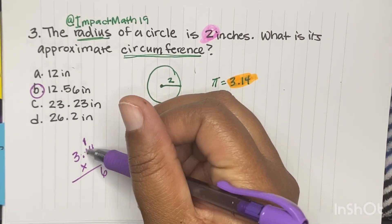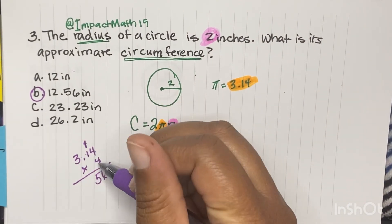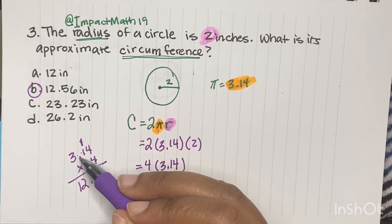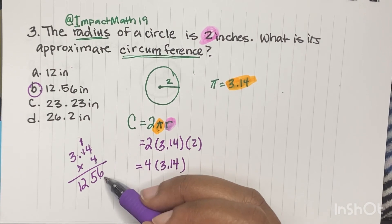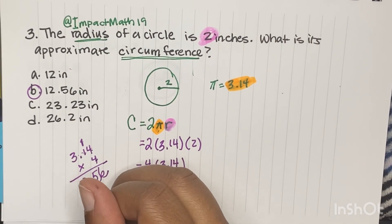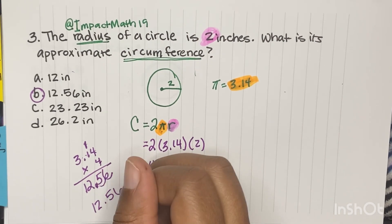But since this is not the test, I'm going to show you how they got 12.56 in case your test has two things that end in a 6. So 4 times 1 is 4, plus 1 is 5, and then 4 times 3 is 12. Now we have two places after the decimal, so we can move our decimal over two spots. So that's how we get 12.56 inches.